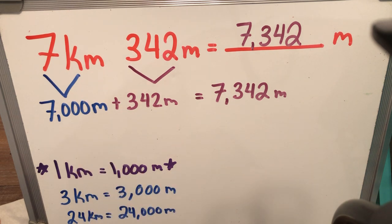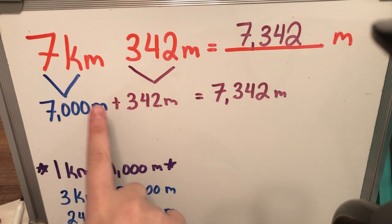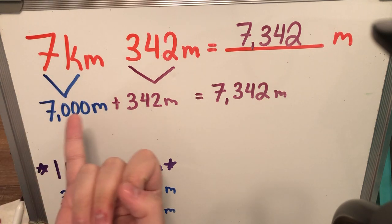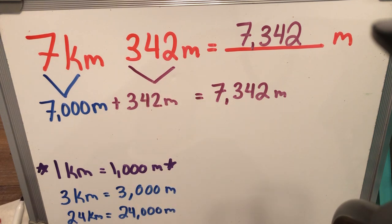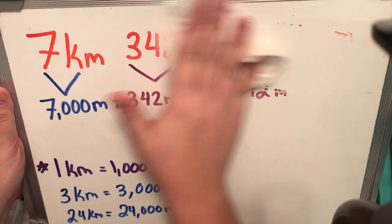So remember, if we're going from kilometers to meters, it is worth 1,000. 1 km is worth 1,000 m. So we took that information and did 7 km is worth 7,000 m plus 342 m, and we got all in total 7,342 m. All right, let's keep practicing.